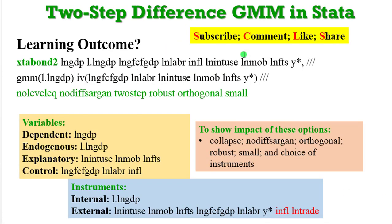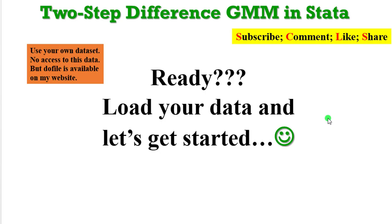The learning outcome of this tutorial is to show you the impact of these options on your results. I've explained what these options mean, and we are going to run several simulations to see how they affect results. These are the variables and their classifications. The internal instrument is the lag of the dependent variable, and the external instrument set includes three explanatory variables, two control variables, and year dummies. I have a control variable in red that I'll include later, and another variable — log of trade — not in my model but in the dataset, which GMM allows you to use as an instrument. Please load your data and let's get started.